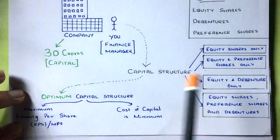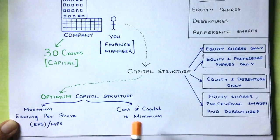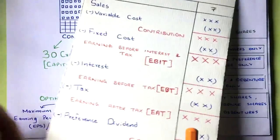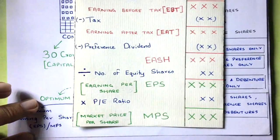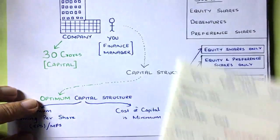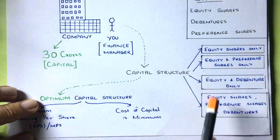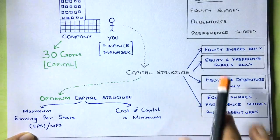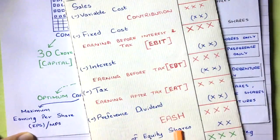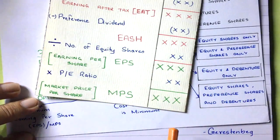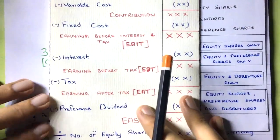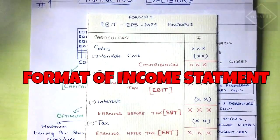The option with the maximum EPS or MPS and minimum cost of capital is the one you choose. This is the format of EBIT EPS analysis you will use to calculate EPS. You have to do it on a columnar basis — if there are four options, you use four columns. Compare the EPS across all options and select the highest. You have to do the EPS analysis for each option and select the highest EPS option.